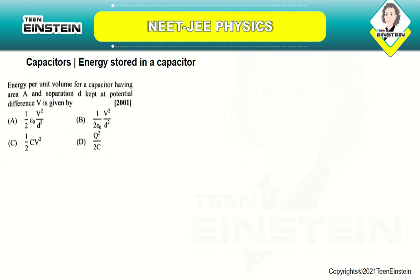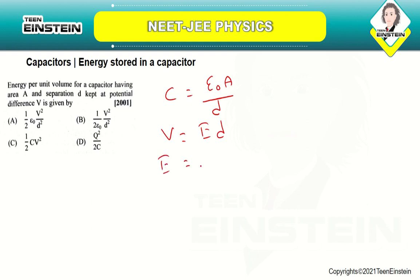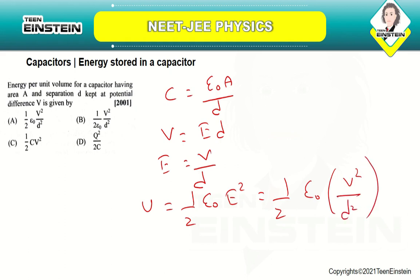Energy per unit volume for a capacitor having area A and separation D kept at potential difference V: The capacitance is C = ε₀A/D and V = ED, so E = V/D. The energy stored per unit volume is U = ½ε₀E² = ½ε₀V²/D². The correct answer is option A: ½ε₀V²/D².